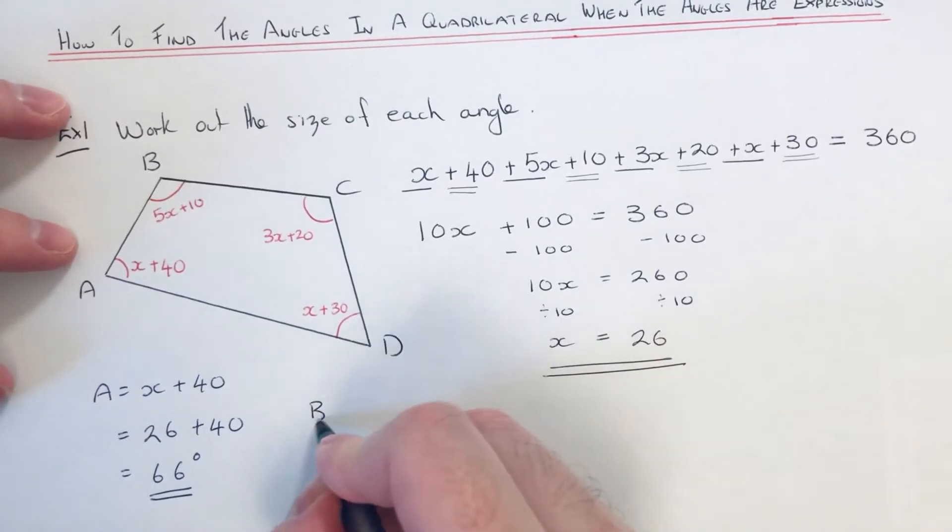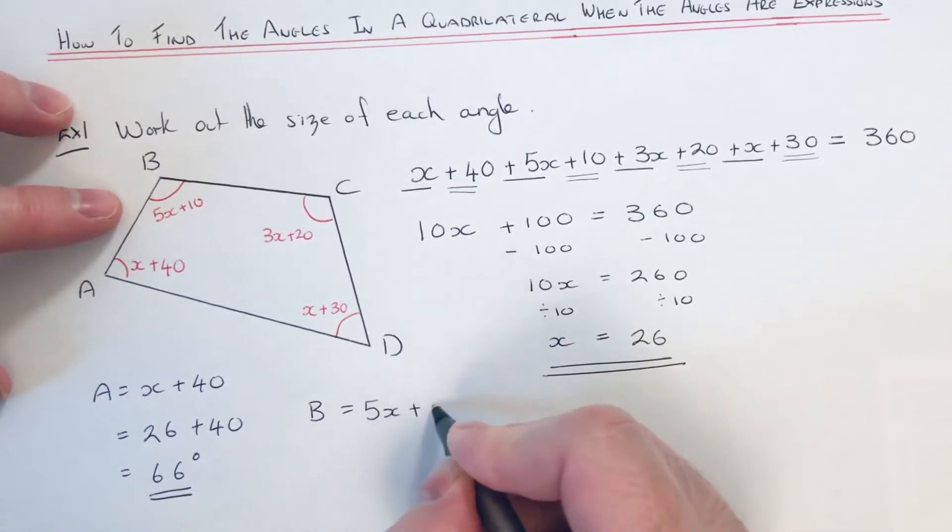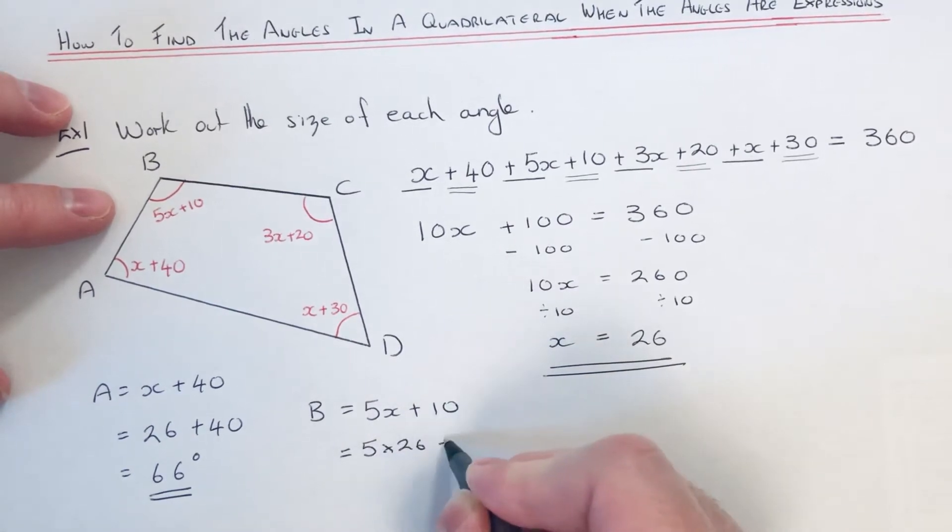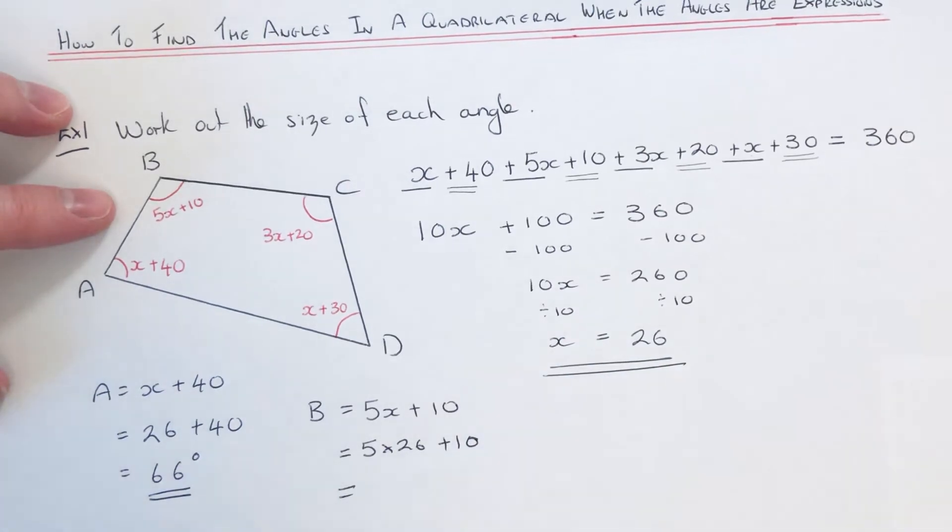Angle B is 5x plus 20. So again if we substitute 26, so 5 times 26 plus 10. So 26 times 5 is 130, add 10 gives us 140 degrees.